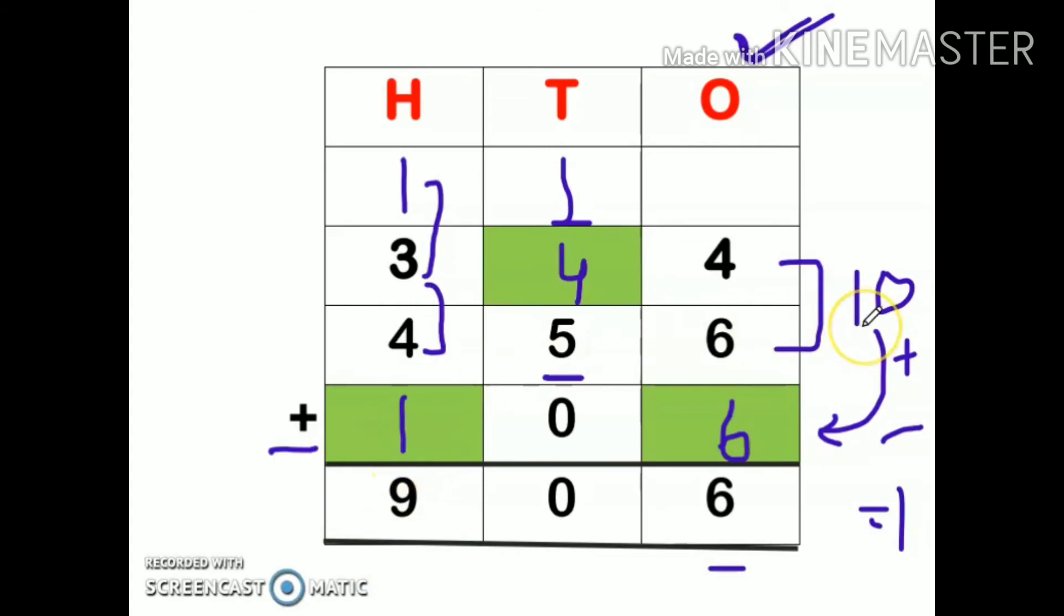It's very simple. First of all you have to see which sum is this. This was addition so I have added all the numbers. So you have to see the answer first. Answer is already given, 906, so I have to fill in the missing number accordingly.